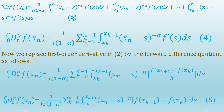I have taken the constant step size h common out of the summation sign and written it with the gamma function, as highlighted in red. This h has been taken common and we have obtained equation 5.